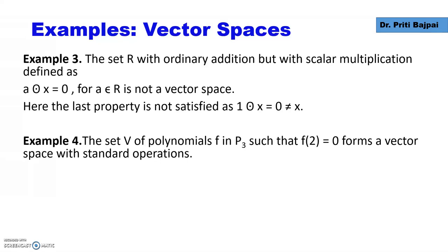This does not form a vector space because the last property does not hold. When we multiply x by 1, according to the rule given here, we should get 0, but we do not get 0. We should get our x. In our case, we are getting 0, so it does not form a vector space.